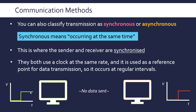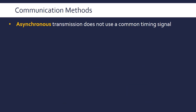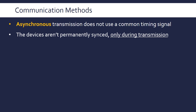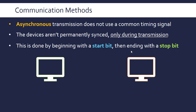It's very unlikely that one clock cycle will be enough time to send all the data needed, so it will just fluctuate between sending data and waiting for the clock to return to the send position. Asynchronous, on the other hand, does not use a common timing signal or common clock — it means 'not synchronous'. Here the devices aren't permanently synced up; they're only synced during transmission. This is done using a start bit at the beginning of the message and a stop bit at the end. Usually one is the start bit and zero is the stop bit.